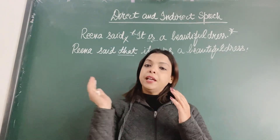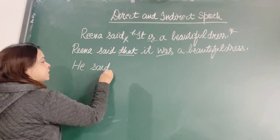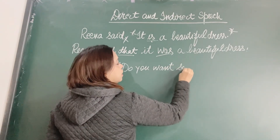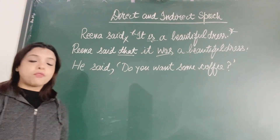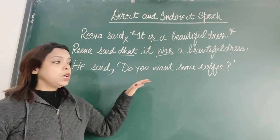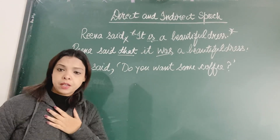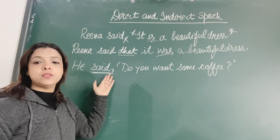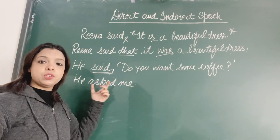This is a simple assertive sentence. But if the sentence is an interrogative sentence, in indirect speech we write it as an assertive sentence only. For example: 'He said, do you want some coffee?' This sentence is interrogative. If you want to change it into indirect speech, we change the interrogative sentence into a simple assertive sentence. Since he is asking a question, we change the reporting verb to 'asked.' He asked me if...